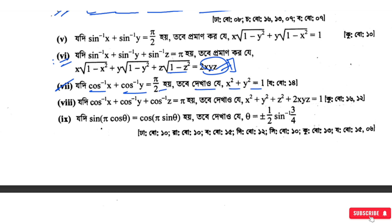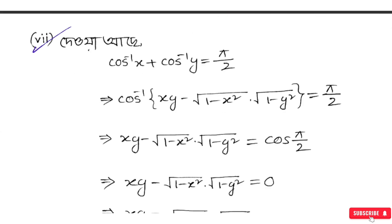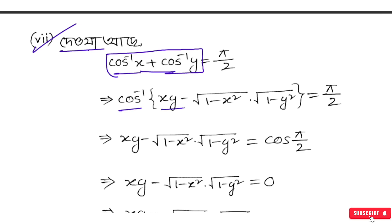Okay, so the solution starts here. Given cos⁻¹x + cos⁻¹y = π/2. Now cos⁻¹x depends on cos⁻¹y, so let's work through this step by step.